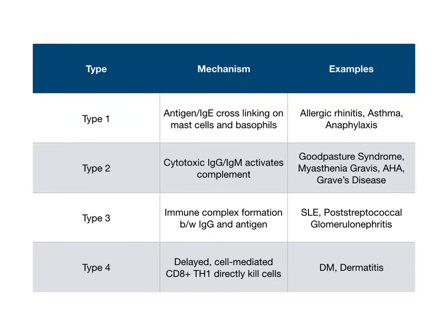In today's video, we're going to go one at a time through each of these four types, paying attention to the normal pathophysiology. I'll always explain the normal science and then give you the mnemonic overlaid on top of that so that you can easily learn this. As a summary, here's everything you need to know. This is what is in First Aid and all the resources out there. There are four different types: type 1, type 2, type 3, and type 4.